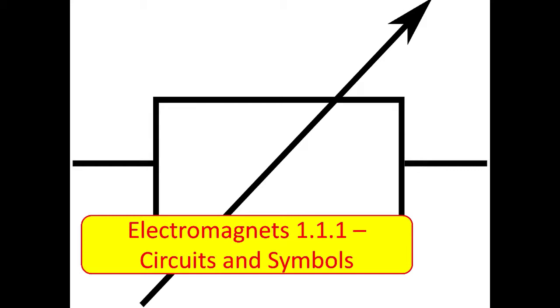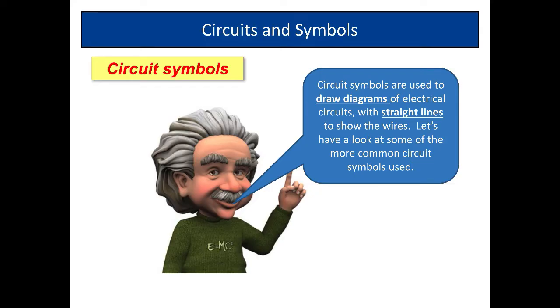Hello and welcome to this first video in the Electromagnetics topic. Here we're looking at circuits and symbols. So now what does this mean? Well, circuit symbols are used to draw diagrams of electrical circuits. It's a common way we have to make sure that everybody does the same thing so all our circuits are identifiable.